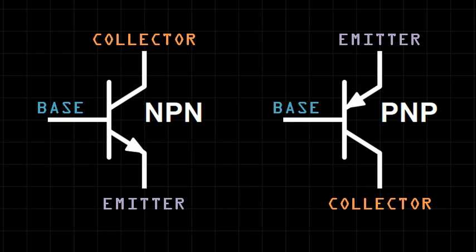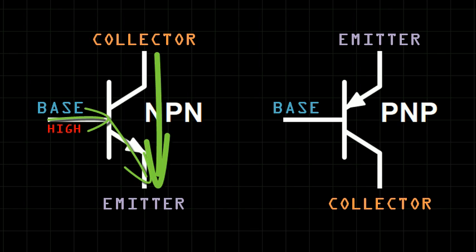We saw for NPN transistors that a small current passing through the base to the emitter will allow a much larger current to pass from the collector to the emitter. This can be done by applying a high voltage to the base relative to the emitter.